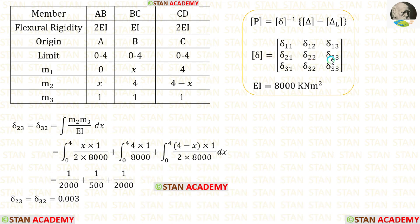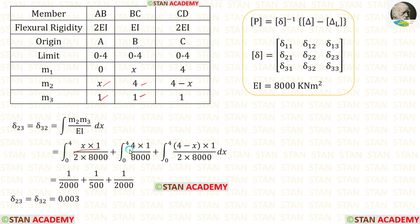Now let us find δ₂₃ and δ₃₂. The formula is ∫M2·M3/EI dx. Applying the values of M2 and M3 and integrating gives three values. Adding them gives δ₂₃ = δ₃₂.